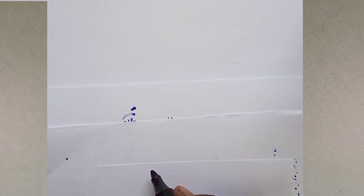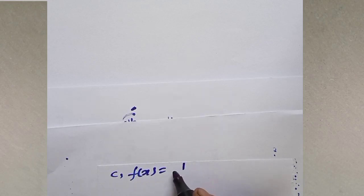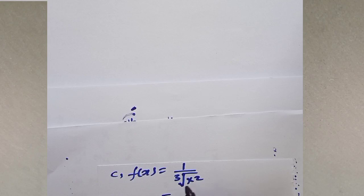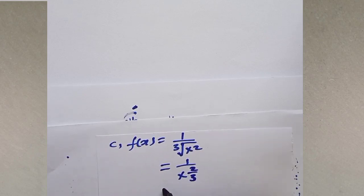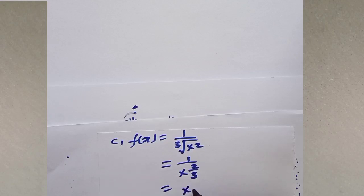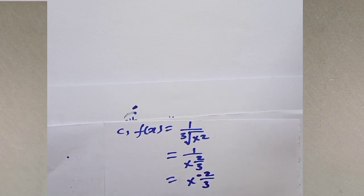Example c: f of x is equal to 1 over the cube root of x squared. Before applying the power rule, you should simplify this function. When we simplify, it becomes 1 over x to the power of 2 over 3, which equals x to the power of negative 2 over 3.